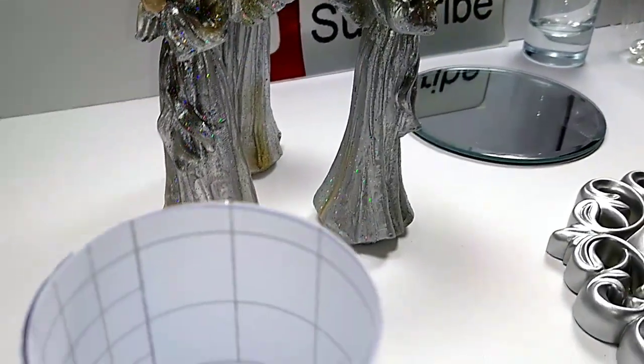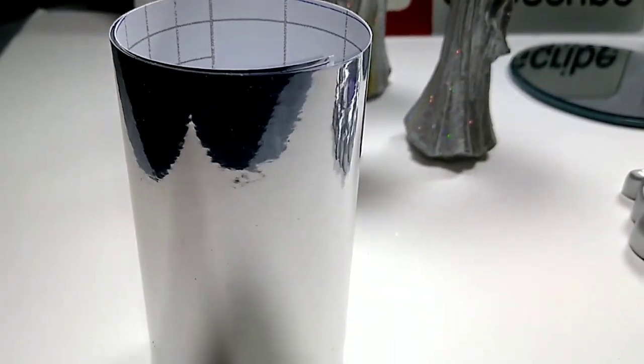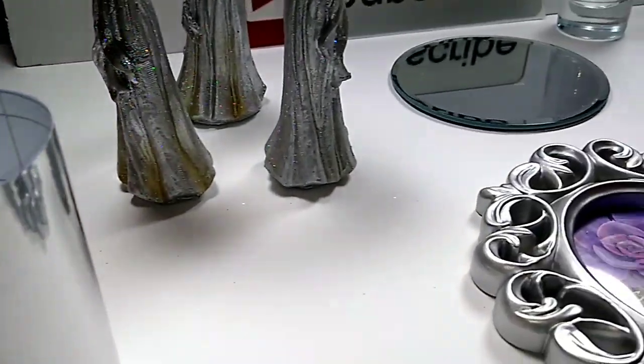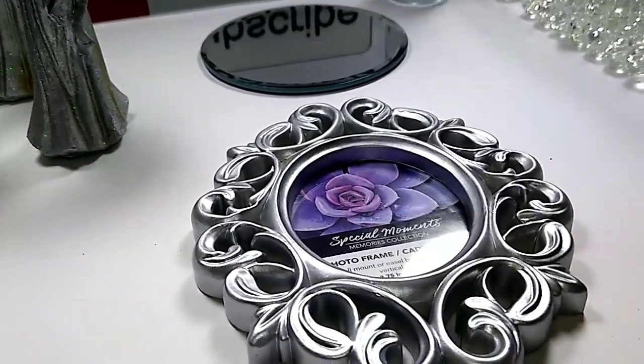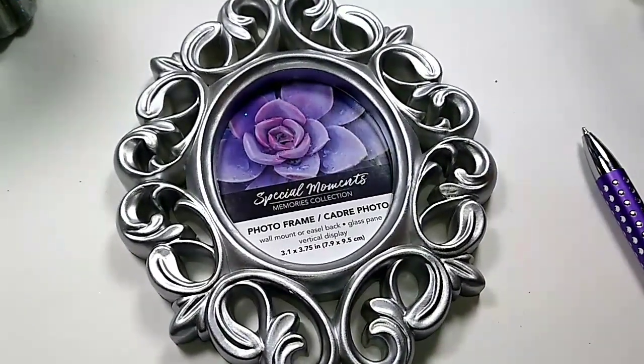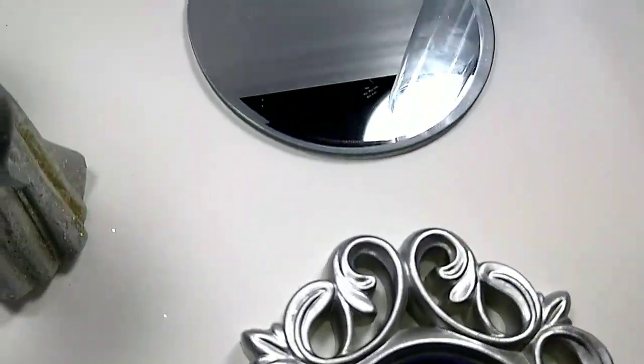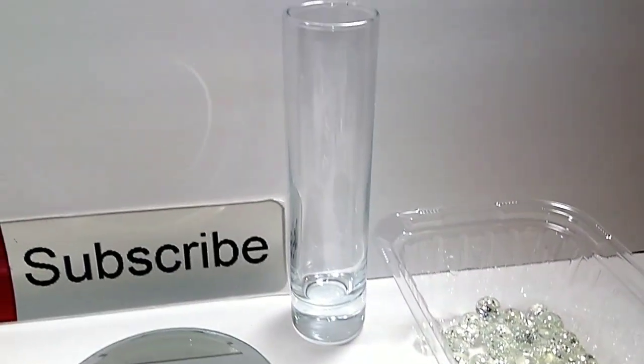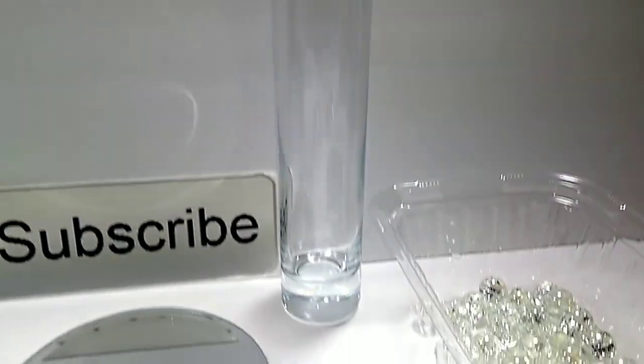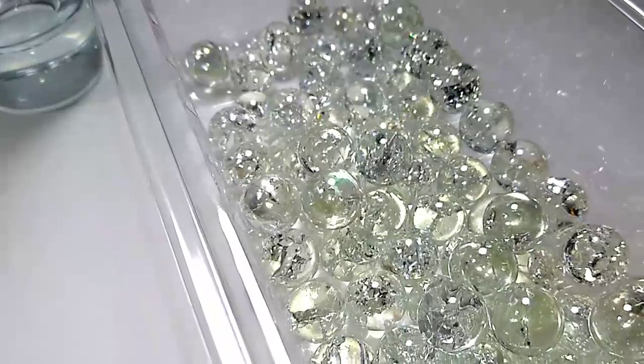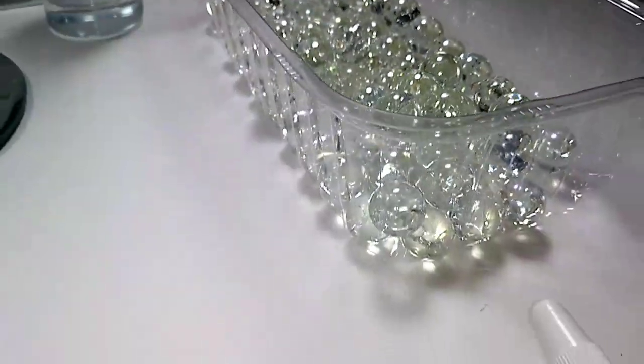The supplies will be these three Dollar Tree angels, some contact paper or gift wrapping paper of your choice, a picture frame like this or the round or square one whichever one you choose, a mirror round or square, one of these flower vases from the Dollar Tree or Family Dollar, and the cracked marbles that we made previously.